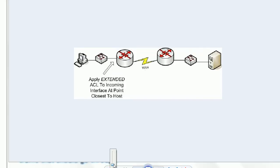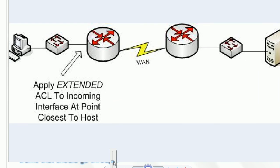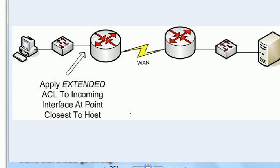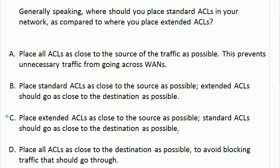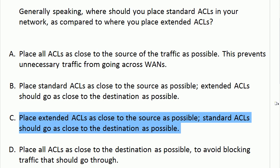That's why, if you're using a standard ACL, put it on the interface closest to the device that should not receive traffic from that source. And if you're using an extended ACL — which you hope you are, since it lets you define traffic by both source and destination IP address — you can put it at the incoming interface closest to the host, so traffic isn't going across the wide area network unnecessarily. The correct answer is C: put your extended ACLs as close to the source as possible; standard ACLs should go as close to the destination as possible.